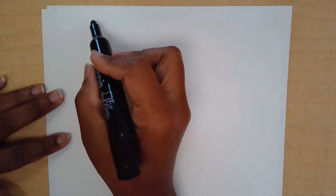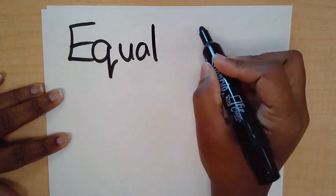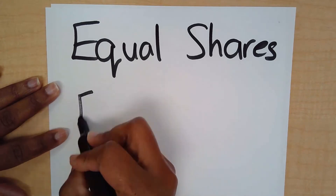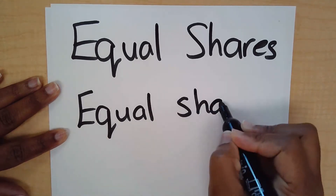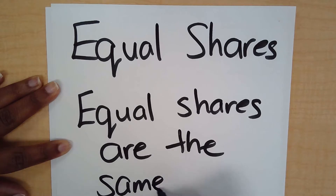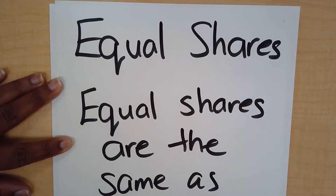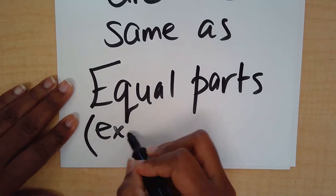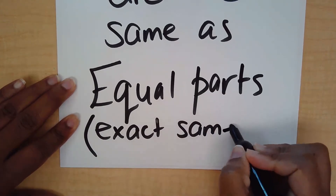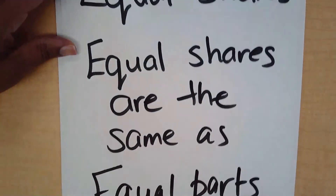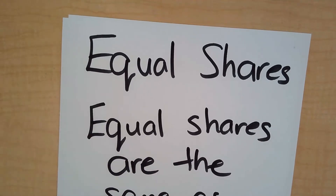Today we are going to talk about equal shares. What are equal shares? Well, if you're thinking that they're equal parts, you are correct. Equal shares are the same as equal parts. And what are equal parts? All that means is that they are the exact same size. That's what's important — they are the exact same size. So if something is being shared equally, that means everyone is going to get the exact same size.